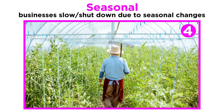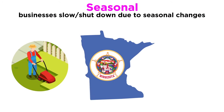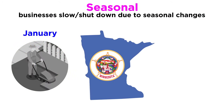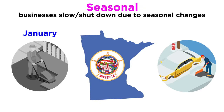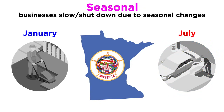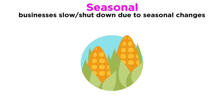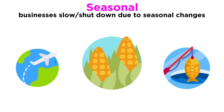Seasonal unemployment happens when industries slow down or shut down for a particular season, or make seasonal shifts in their schedules. Some jobs just aren't applicable all year long. For example, if you mow lawns in Minnesota, you'd have a hard time finding lawns to mow in January. Similarly, if you plow snow in Minnesota, you'd have a hard time finding snow to plow in July. Much seasonal unemployment occurs in fields such as agriculture due to the timing of when crops are harvested.